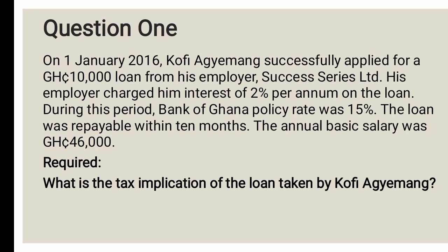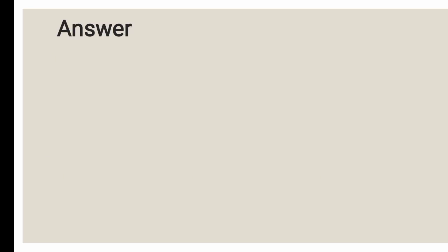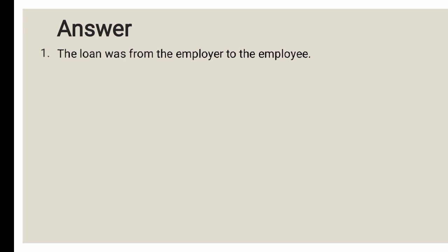We must check all three conditions. The loan is from the employer to the employee — confirmed. The repayment period is 10 months, but per the condition it is supposed to exceed 12 months. Since it is only 10 months, this condition is not met.